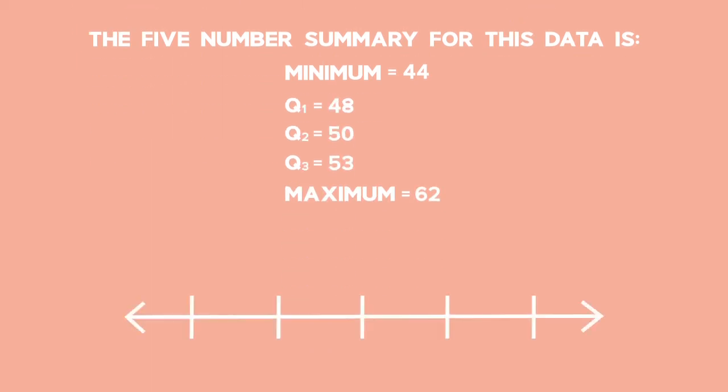Draw a box and whisker plot of the data using the five-number summary. Our minimum data is going to be at 44 and our maximum value is going to be at 62.